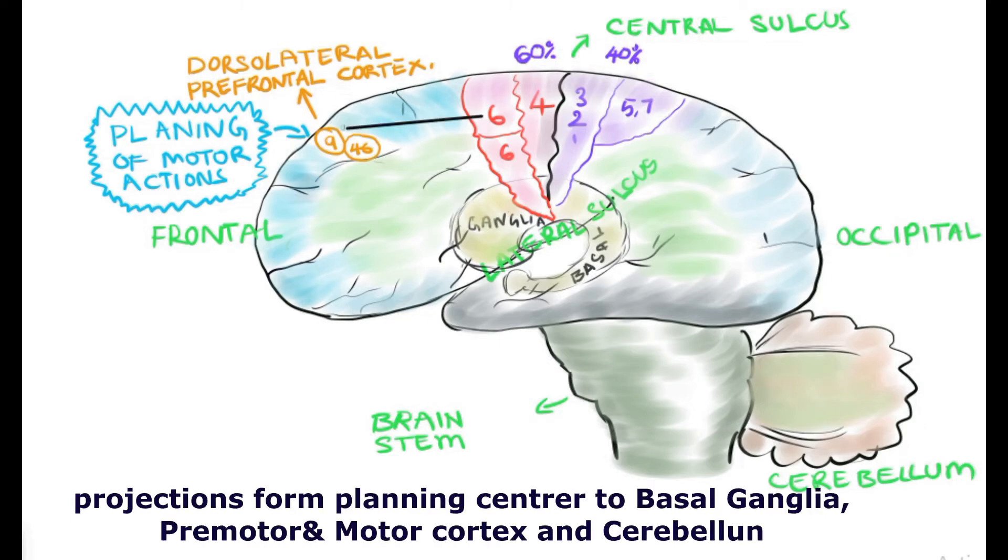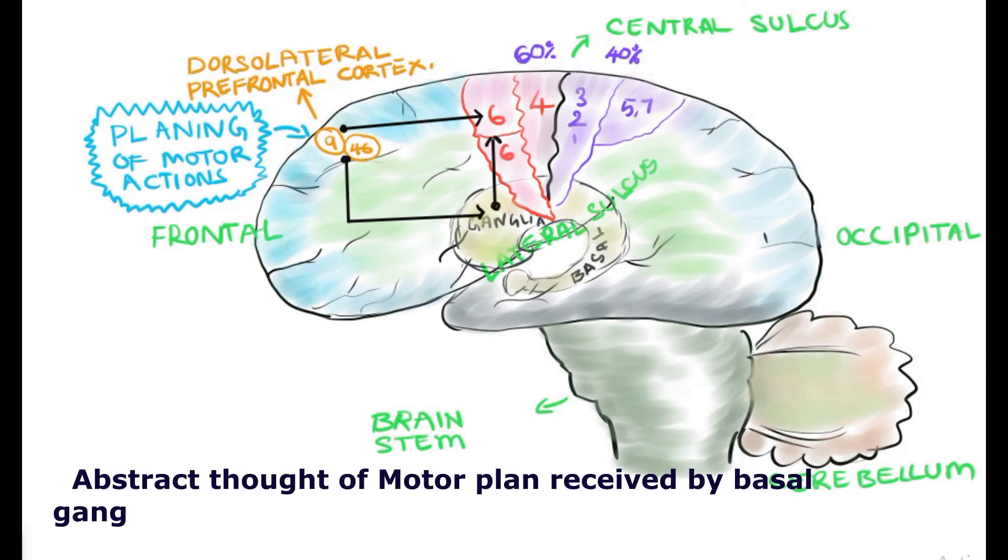The lateral lobe and intermediate lobe of the cerebellum also participate in the motor modulation or smooth coordination plan and execution of the motor act. In this illustration, the connection is shown from various areas.